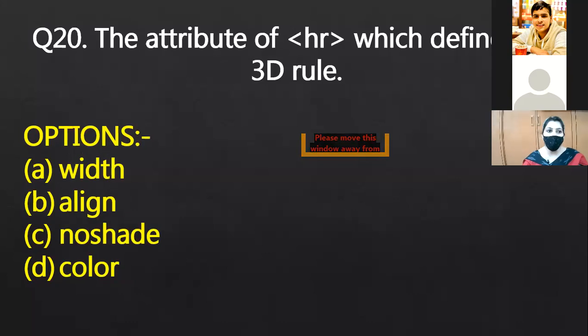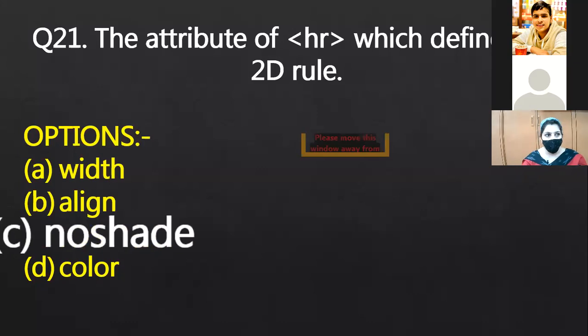The attribute which defines the 3D rule. That is no shade. What dimension does it depict in? 2D, right? So with the help of the color attribute, you can set the three-dimensional view. Otherwise, if you don't set the color, there will be no shade. That will be the simple black and white. The grayish color is by default. That will not make the 3D rule. The attribute that defines the 2D rule. No shade. Now the answer will be no shade. The difference is clear. You have to set the color attribute. And if you are setting the two-dimensional view of your line, then no shade attribute is to be used.